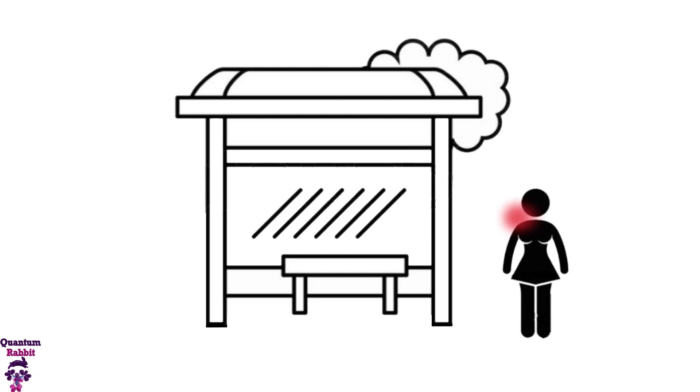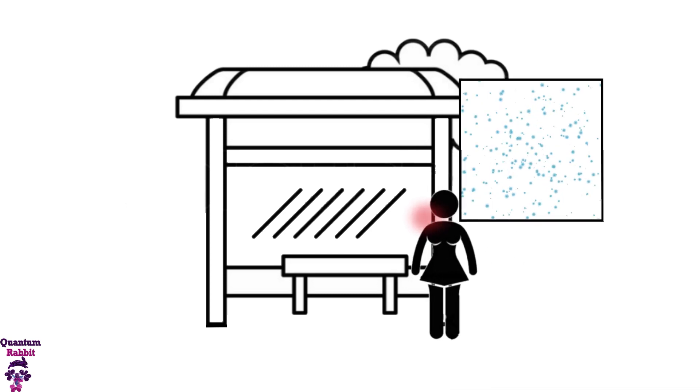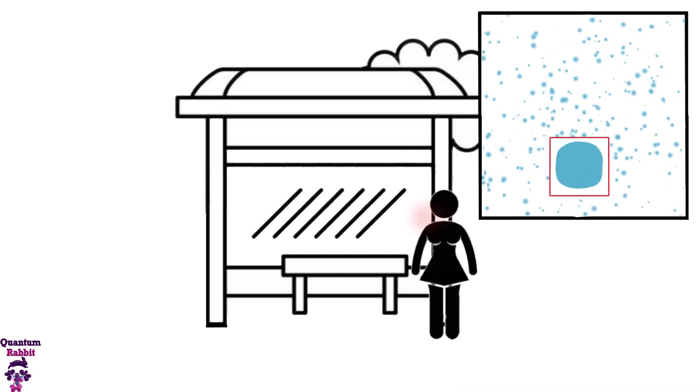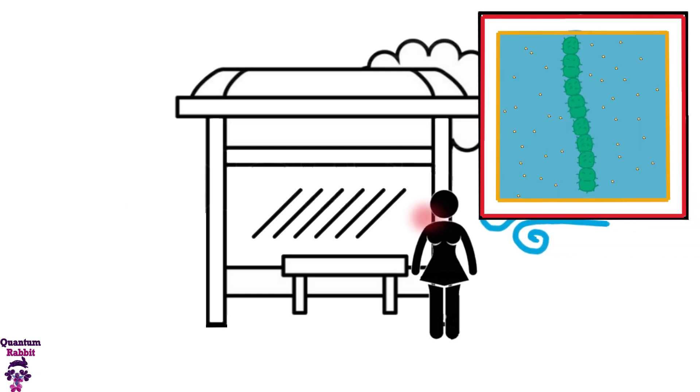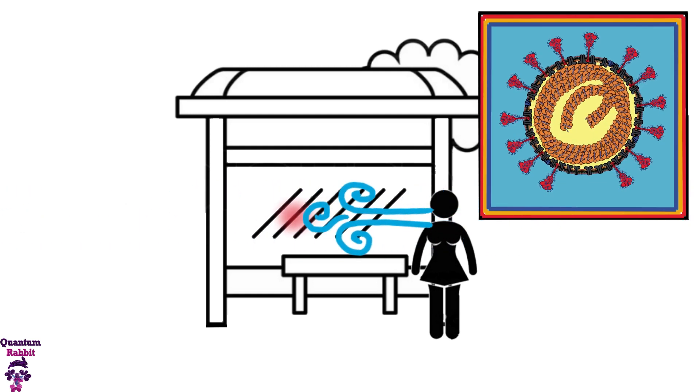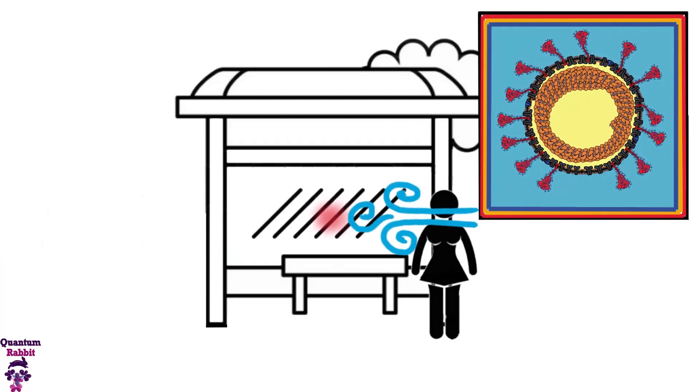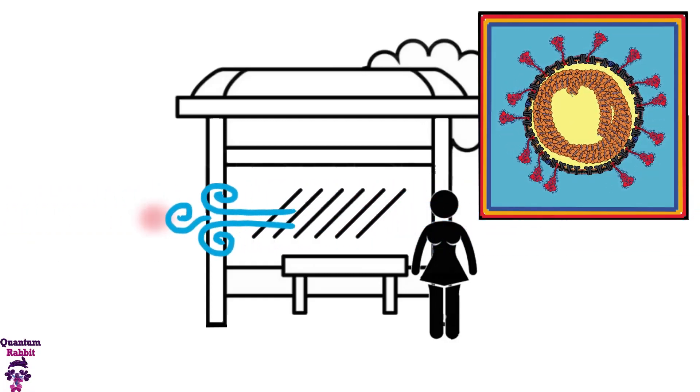An asymptomatic person releases virions in saliva micro droplets when exhaling air. These micro droplets can contain up to 500 virions. The micro droplets are randomly dispersed and their trajectory is directed by the wind.